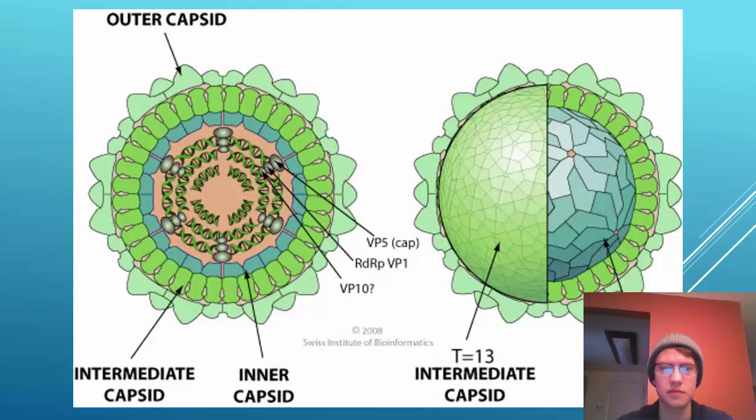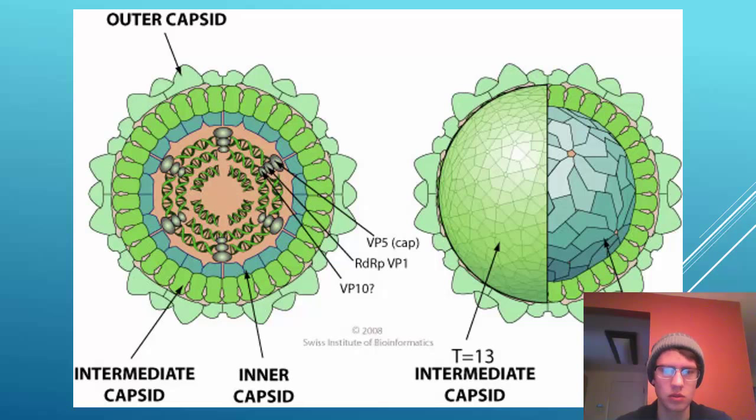Here's a picture of the Coltivirus. The name 'Colti' actually comes from shortening of Colorado Tick. There are two species in the Coltivirus genus. It has an icosahedral structure with three capsids — an outer, an intermediate, and an inner capsid. It's about 60 to 80 nanometers in diameter.